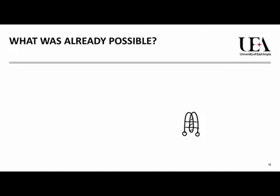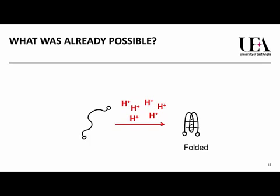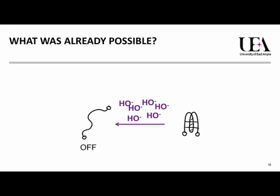Once the DNA is folded, we can also unfold it. To do this, we need to get rid of all the acid we just added by adding something to neutralise it — which we call a base, or you might know it as an alkali. If we add the base, we then get unfolded DNA again. This system can be used as a switch: the DNA in the two different conditions has completely different shapes, so we can recognise this as either folded or unfolded, or on or off.